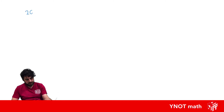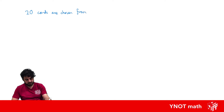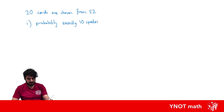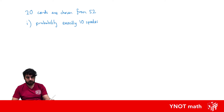Let's look at some examples. If 20 cards are chosen from a standard deck of 52, we want to find the probability of drawing exactly 10 spades. First we check if this is a Bernoulli trial — and it is, because we can think about drawing either a spade or not a spade.